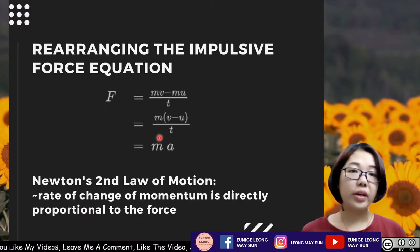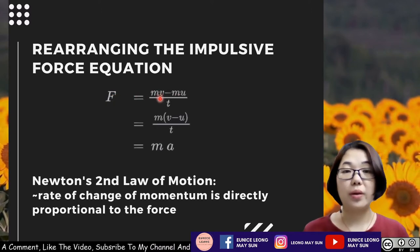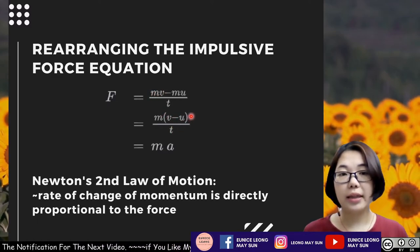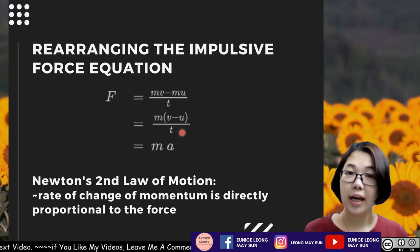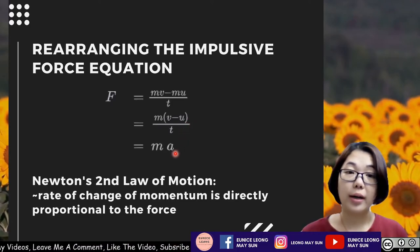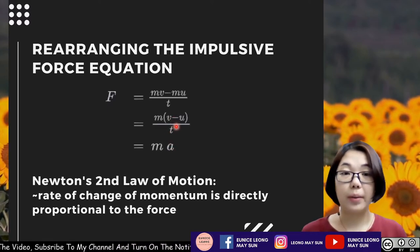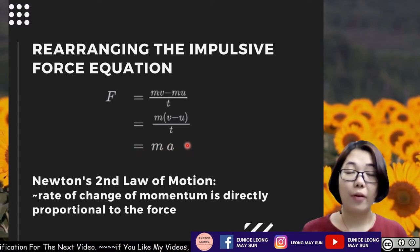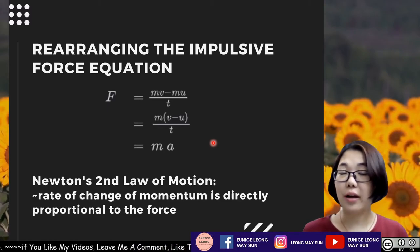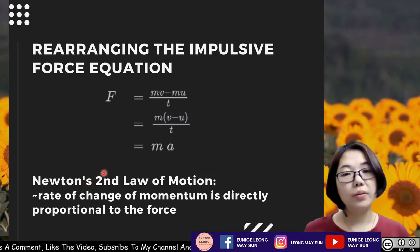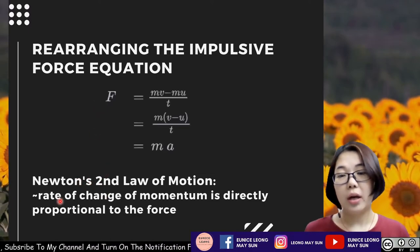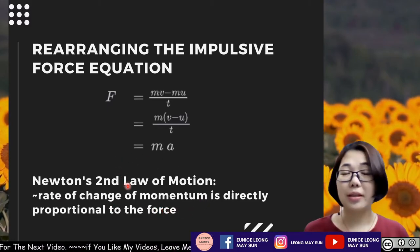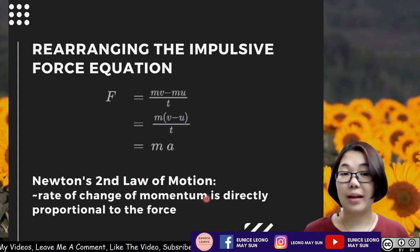If we rearrange the impulsive force equation F = (mv − mu) / t and factorize out the mass, we get m × (v − u) / t. Since (v − u) / t is the formula for acceleration, we substitute and get F = ma — the same formula as Newton's second law of motion. That's why Newton's second law has another definition: the rate of change of momentum is directly proportional to the force. This was the definition Newton used when he first postulated Newton's second law.